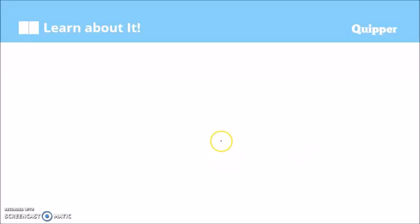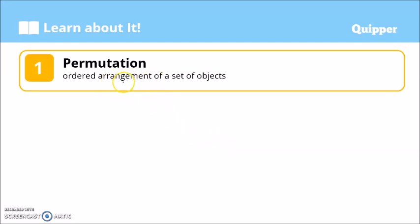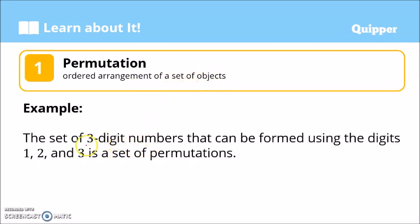So, what is a permutation? Permutation is an ordered arrangement of a set of objects. It's one of the counting techniques. For example, the set of three-digit numbers that can be formed using the digits 1, 2, and 3 is the set of permutations. All the three-digit numbers that we can form using 1, 2, 3 is a set of permutations.